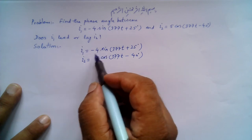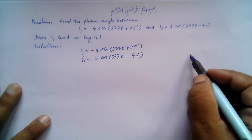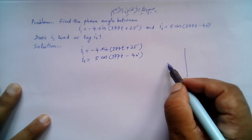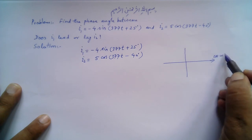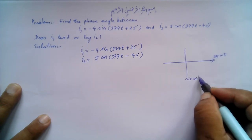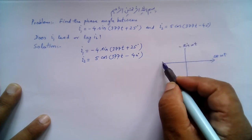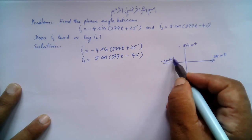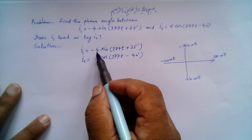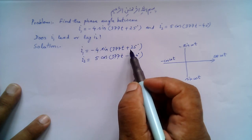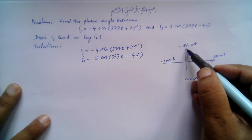What we need to do is transform i1 from the minus sine form into a positive cosine form. Let's look at this graphical transformation. We have cosine(ωt) here, plus sine(ωt) here, minus sine(ωt) here, and minus cosine(ωt) here. So let's transform i1 from -4sin(377t + 25°) into the form of a cosine function.